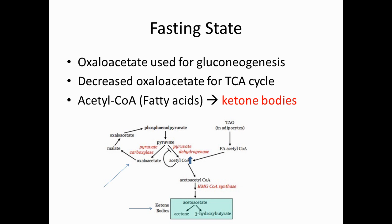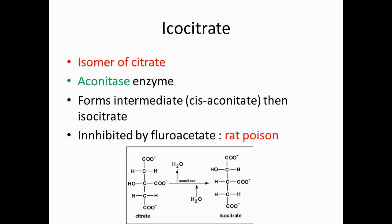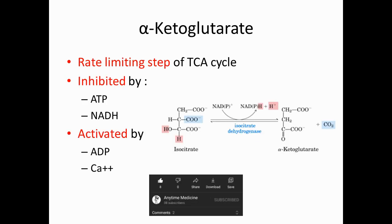The next step of the TCA cycle is isocitrate. Isocitrate is an isomer of citrate, which is converted from citrate with the help of the enzyme aconitase, forming the intermediate cis-aconitate. This step is inhibited by fluoroacetate, which is rat poison.